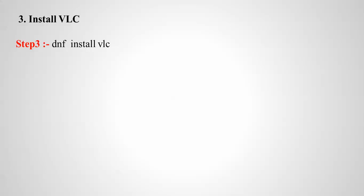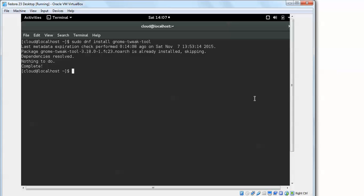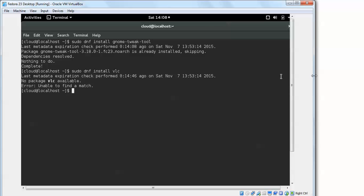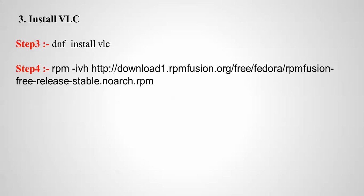To install VLC, type: sudo dnf install vlc, then press Enter. First we will install the RPM, and then we will run dnf install vlc. So first of all I'm going to add a third-party repository and then install VLC.